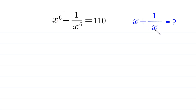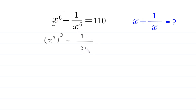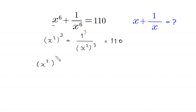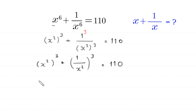Let's start. x to the power 6 can be written as (x²)³, and 1 over x to the power 6 can be written as (1/x²)³. So the expression becomes (x²)³ plus (1/x²)³ is equal to 110, since 1 is the same as 1³.